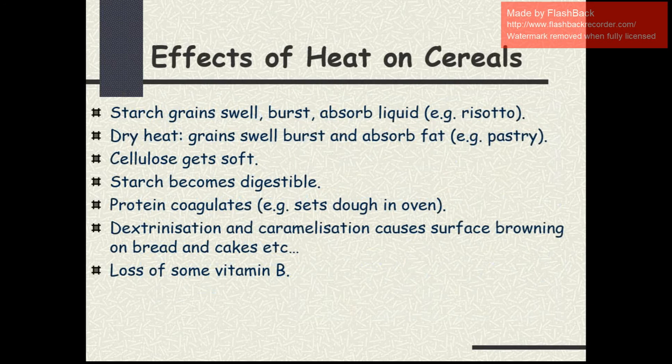The effects of heat on cereals: when you apply heat on the cereals, some changes will occur. The first one is starch grains swell, burst and absorb the liquid. With application of dry heat, the grains swell, burst and absorb the fat. Next, cellulose gets soft and the starch becomes digestible. The proteins get coagulated. Two processes, namely dextrinization and caramelization, cause surface browning on bread and cakes. There is also loss of some vitamin B.